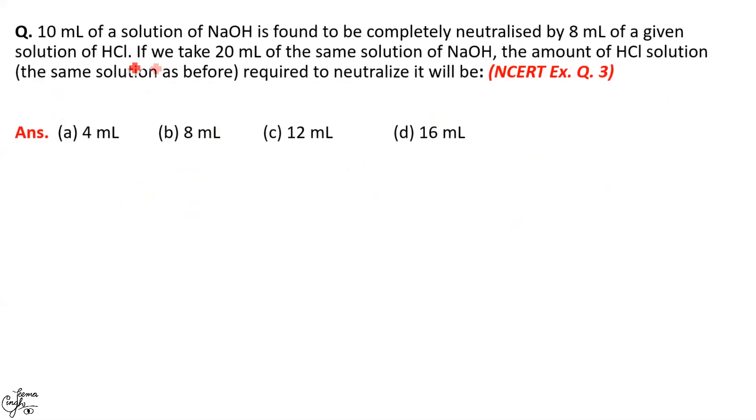Let us quickly answer the following multiple choice question based on neutralization reaction which says 10 ml of solution of sodium hydroxide is found to be completely neutralized by 8 ml of a given solution of HCl. If we take 20 ml of same solution of NaOH, the amount of HCl solution required to neutralize it will be. So you have four choices, 4, 8, 12, 16. Since sodium hydroxide and hydrochloric solutions are same in both the cases, you can simply apply unitary method for finding the answer. That is, if 10 ml of NaOH requires 8 ml of HCl, then 20 ml of NaOH would require 8 by 10 into 20 that is 16 ml. So your answer is D.